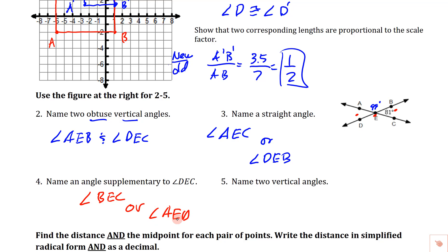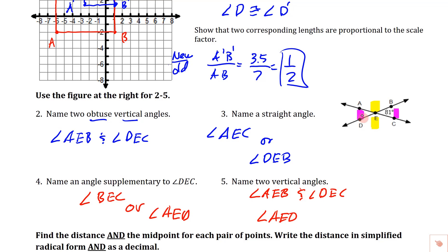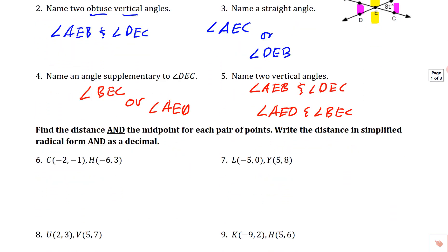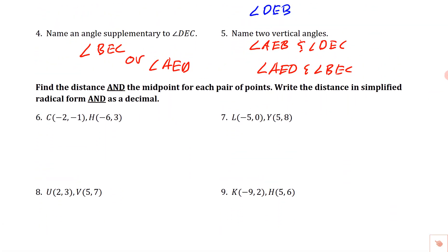Name two vertical angles — vertical angles are the ones across from each other. We could say angle AEB and angle DEC are vertical, or angle AED and angle BEC are vertical. Just list one pair. Then find the distance and midpoint for each pair of points, writing distance in simplified radical form and as a decimal. The distance formula is the square root of (x₂ − x₁)² + (y₂ − y₁)², based on the Pythagorean theorem.